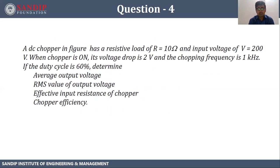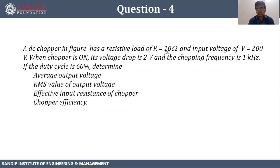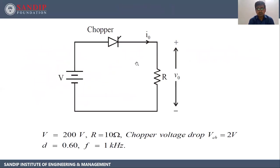Next question. A DC chopper has a resistive load of R equals 10 ohm and input voltage V equals 200 volts. When the chopper is on, its output voltage drop is 2 volts and chopping frequency is 1 kilohertz. If the duty cycle is 60 percent, determine the average output voltage, RMS value of output voltage, effective input resistance of the chopper, and chopper efficiency. So V is 200 volts, R is 10 ohm, Vch is 2 volts, duty cycle D is 0.6, and F is 1 kilohertz.